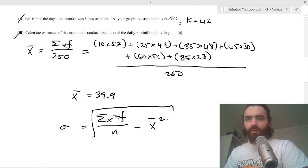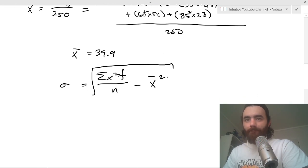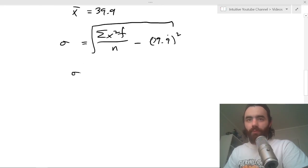Well, this is just this exact same thing but with all of these values, these x values, squared. So what you do is you calculate that, put it into there, and then you minus this squared, which would be minus 39.9 squared, and then you square root the whole thing.